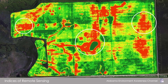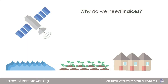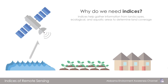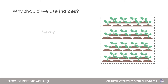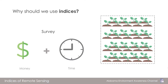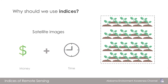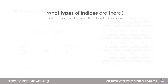So, why do we need indices? Different indices help us with the acquisition of land cover, landscapes, and ecological and aquatic information from satellite and drone data through the analysis of multi- or hyperspectral imagery bands. We can easily determine our desired land cover distribution in a large area. For example, if you want to know the cropping pattern distribution of an area of 2,500 square miles, doing that by ground survey would cost a lot of money and time. If you use satellite images and vegetation indices, you can easily measure the cropping pattern and distribution with minimal cost of time and money.